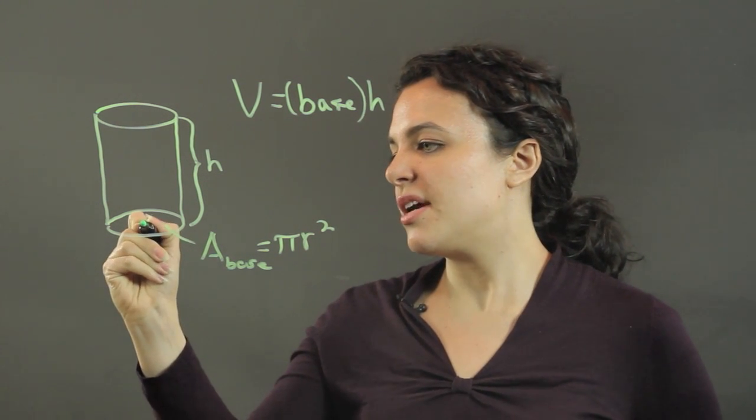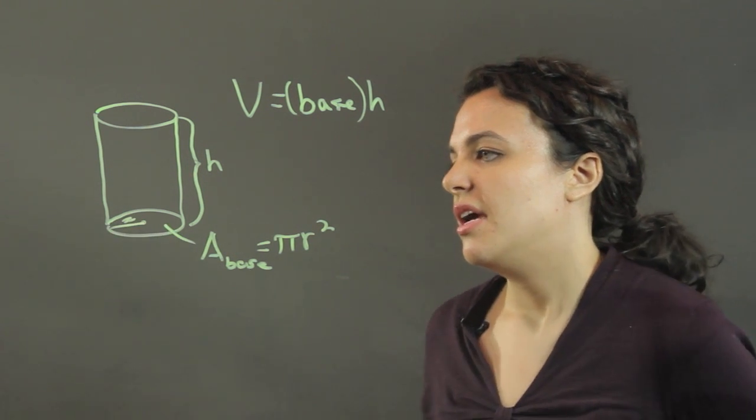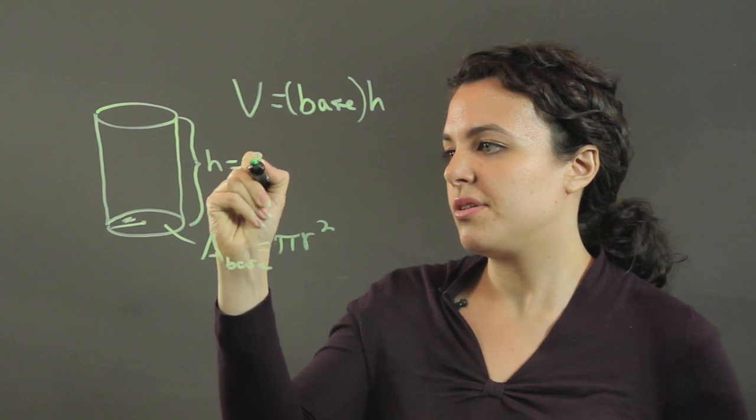Let's say we have a cylinder with a radius of 2 and a height equal to 3.